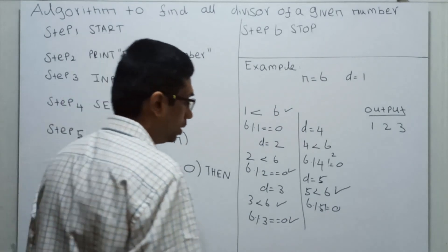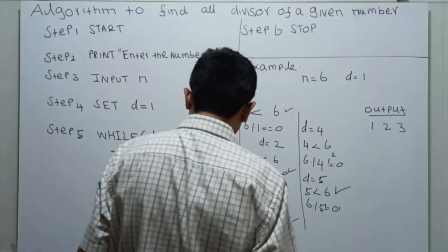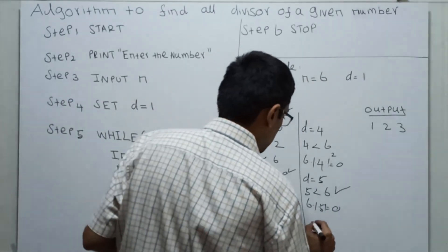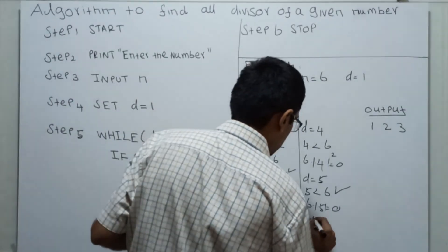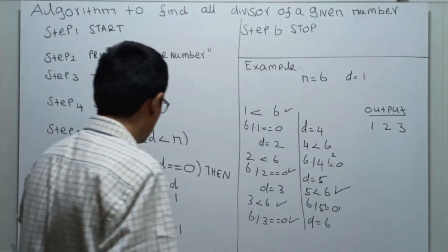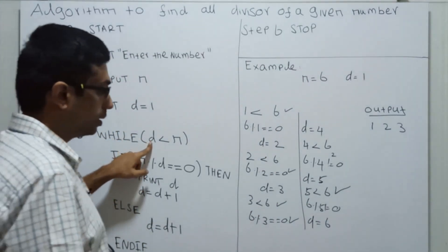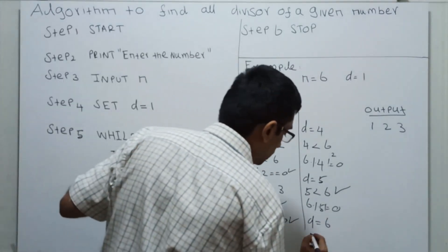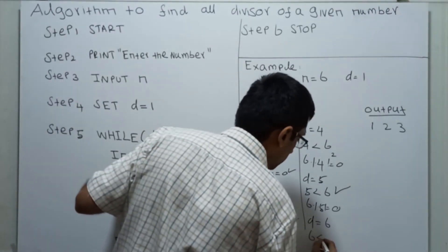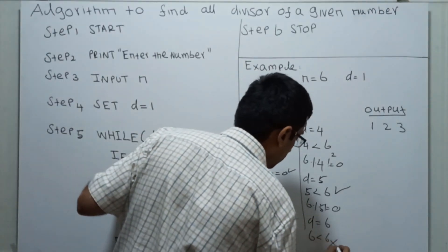D = D + 1. D is now 6. 6 less than 6 is false.